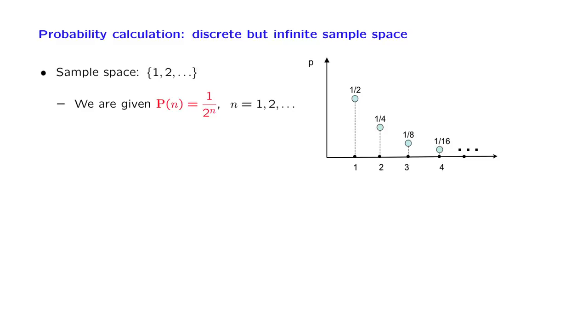Is this good enough? Is this information enough to determine the probability of any subset? Before we look into that question, let us first do a quick sanity check to see whether these numbers that were given look like legitimate probabilities.